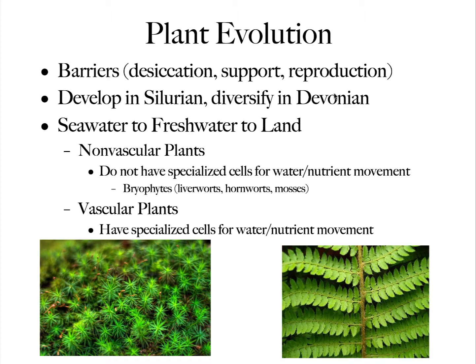Plants really started developing in the late Ordovician, but by Silurian time they started taking off, and then the Devonian period really marked a big diversification for plants. They had to make that transition from seawater to freshwater to land.